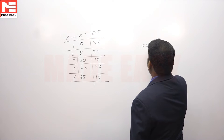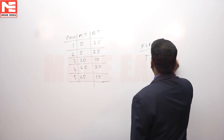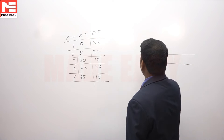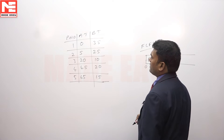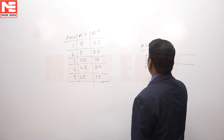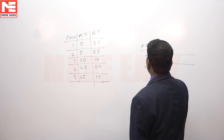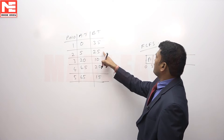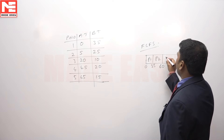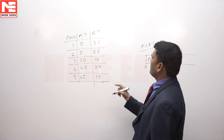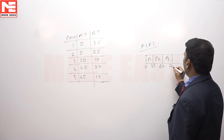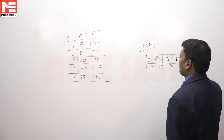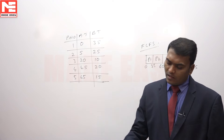With FCFS, whichever process comes first will be executed first. Start with P1 — time always starts at 0, and P1 requires 35. Next, take P2 which requires 25, so that is 60. Next take P3 which requires 10, so that is 70. P4 requires 20, that is 90. And P5 requires 15, that is 105. That is your FCFS.